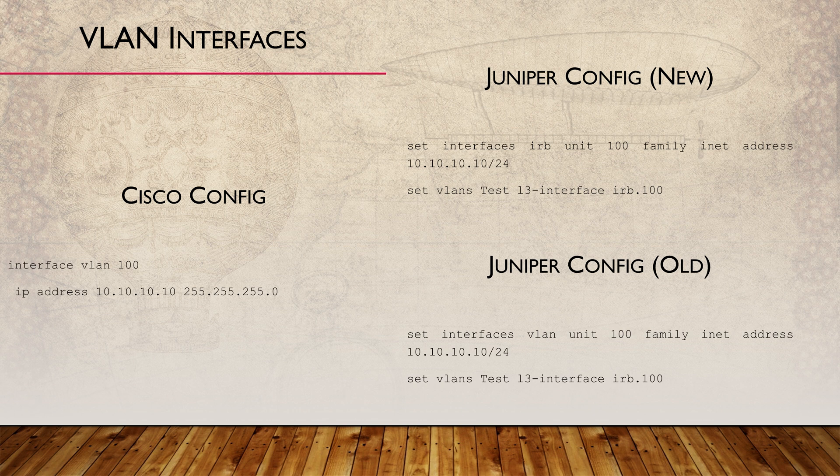VLAN and IRB interfaces map an IP address to a VLAN. If you're coming from a Cisco background, you may know this as an SVI. VLAN interfaces and IRB interfaces are the same thing — VLAN is used on older versions of Junos while IRB is used on newer versions. We configure the VLAN or IRB interface with one or more units and assign an IP to each. Then, under the VLAN configuration, we map the VLAN name to the virtual interface and unit number. We'll see this in action in video 4 when configuring a DHCP server.